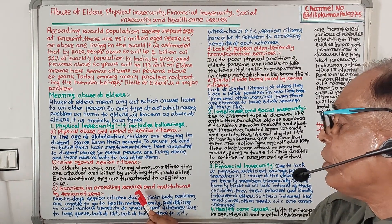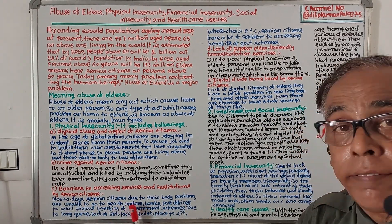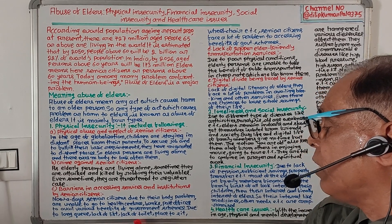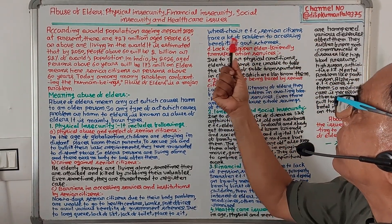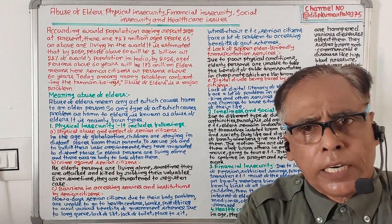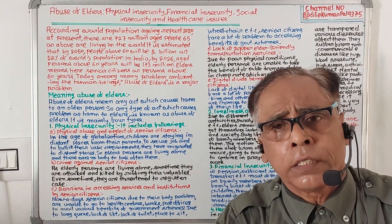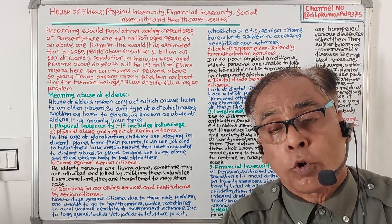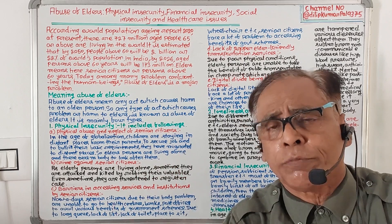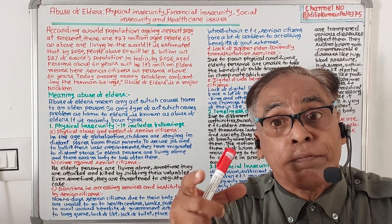Number three is barriers in accessing services and institutions by senior citizens. Nowadays, due to body problems, senior citizens are unable to go to health centers, banks, and post offices to avail various government scheme benefits. Due to long queues, lack of lifts, lack of toilets, places to sit, and wheelchairs, senior citizens face a lot of problems in accessing these services.